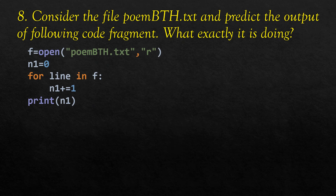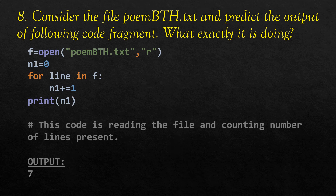Now consider the file points.txt and predict the output of the following code fragment. The file is opened in read mode, and n1 is initialized to zero. The for loop iterates through the file line by line, incrementing n1 by one each time. This code counts the number of lines present in the file. Running the code gives an output of seven.